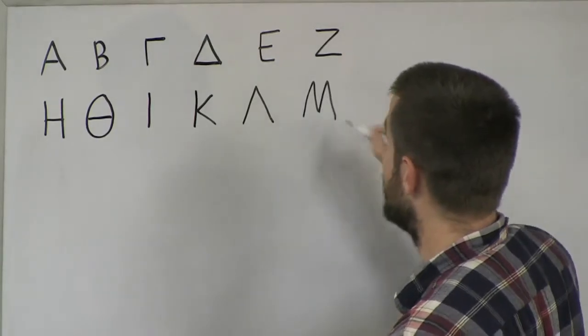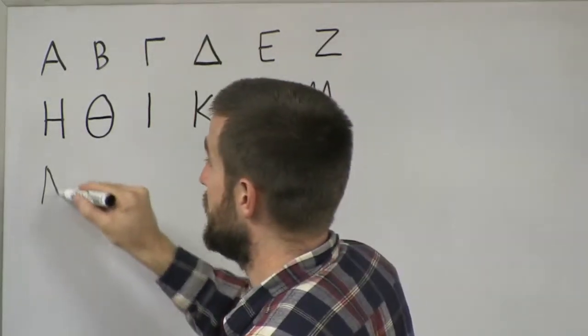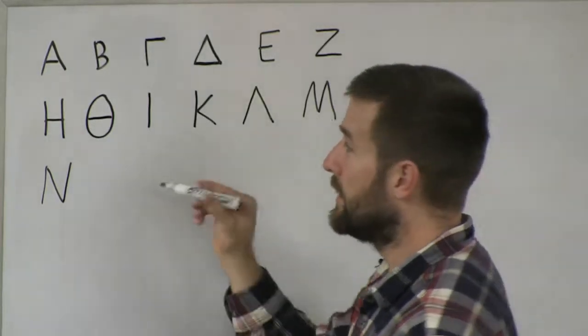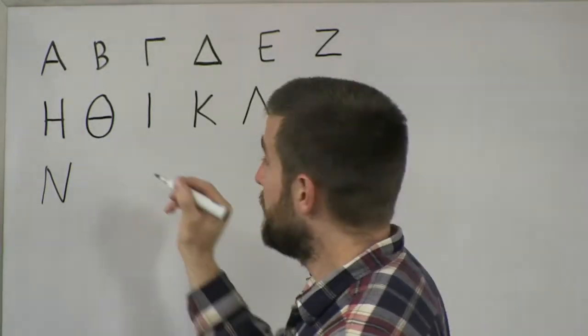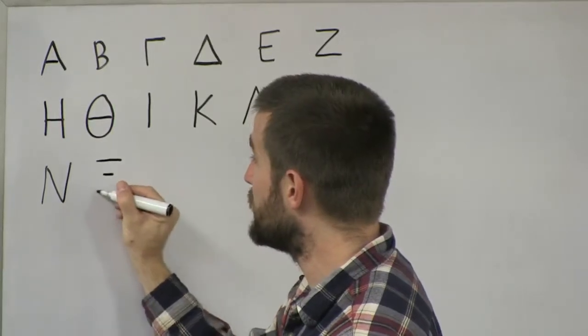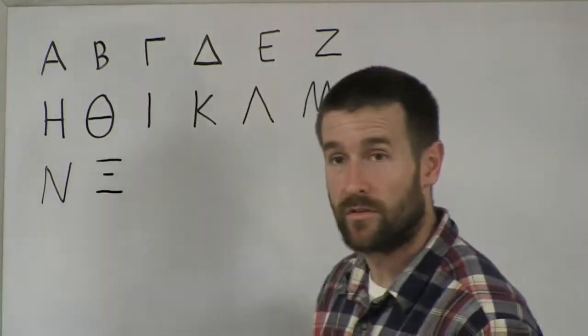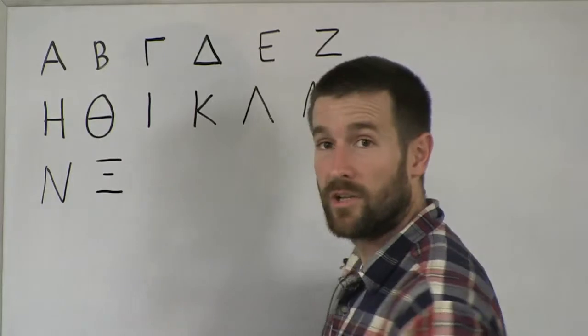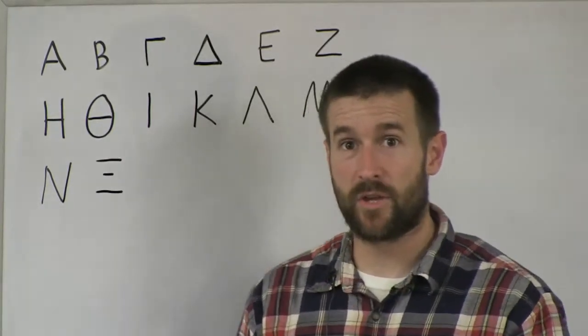And then we've got Mi, Ni. Okay, those are pretty obvious. And the next one, Xi, is made with three horizontal lines and the one in the middle is just not as long as the other two. Okay, so the top and the bottom are a little longer. And I hope you have a piece of paper and you're writing these out as we go.